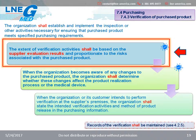And then in section 7.4.3, it is also not specific to supplier control, but to the verification of purchased product. We can find a link to the supplier evaluation in the requirement linked to incoming inspection. The extent of verification activities should be based on the supplier evaluation results and proportionate to the risk associated with the purchased product. This is where organizations may, for example, adjust their incoming inspection sampling plan based on the supplier's performance with past deliveries.